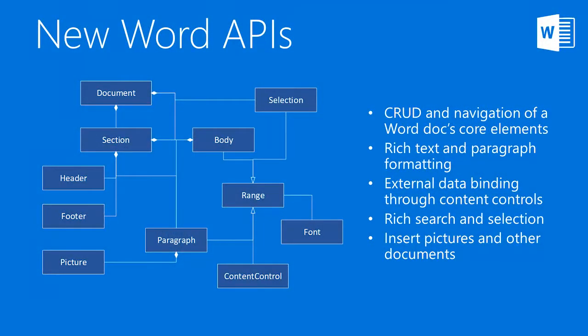On this diagram, you can see the set of objects that we shipped in Office 2016. We prioritized the document assembly scenario and are offering enough objects to achieve those tasks in Microsoft Word. Our main object is the document object, which is the main entry point of the API and recognizes three important parts of any Word document: sections, body, and selection.